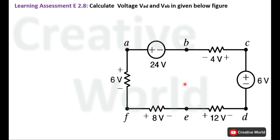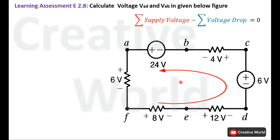Before we start the solution, we will make an assumption about the direction of flow of current in this circuit. We will assume the direction of current is counterclockwise — it is totally our own choice, and you may take the direction of current clockwise as well. The basic equation of Kirchhoff's Voltage Law is: summation of supplied voltage minus summation of voltage drop equals zero.